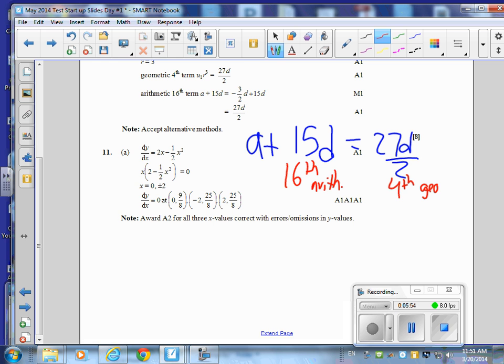And I remember A was negative 3 halves D. Right? So let's see. Negative 3 halves D plus 30 halves D. Is that equal to 27 halves D? You just proved it. And that's number 10 of the paper.